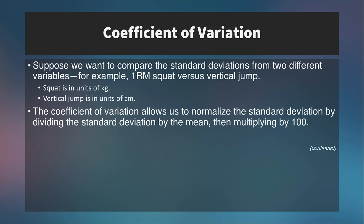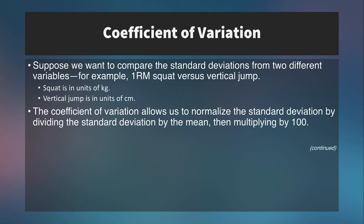Now, the last measure of variability to look at is the coefficient of variation. The coefficient of variation is kind of like a standard score for variability. It describes the variability in terms of a percent. So this is particularly helpful if we want to do something like compare the variation between two different scores that use different units. So a 1RM back squat would use kilograms, whereas a vertical jump would use centimeters. The coefficient of variation allows us to normalize the standard deviation by dividing by the mean and then we multiply it by 100.